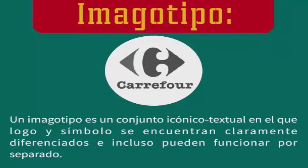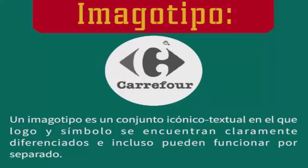Lo que puede suceder en caso positivo con el imagotipo. El imagotipo es el conjunto del texto y el símbolo, y tienen una característica muy notable: se pueden funcionar juntos o pueden aparecer por separado. Puedo colocar tranquilamente el símbolo independiente al logotipo, puedo colocar el logotipo independiente al símbolo, y la gente puede reconocer inmediatamente la marca de la que se está hablando.